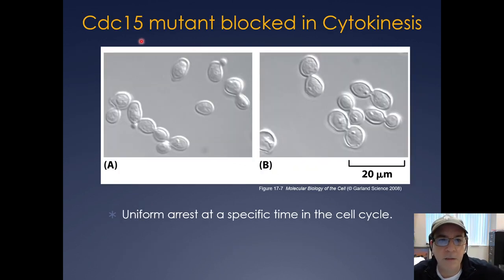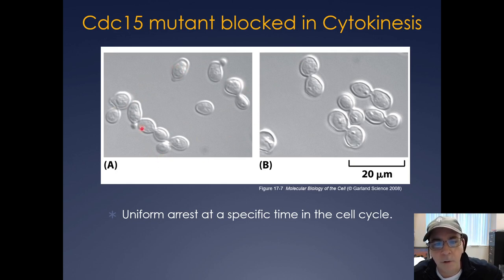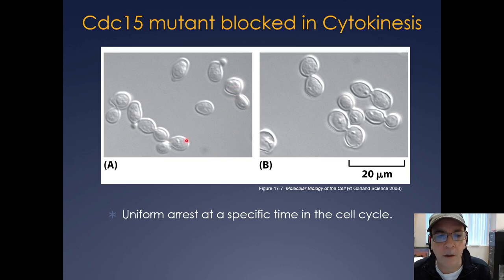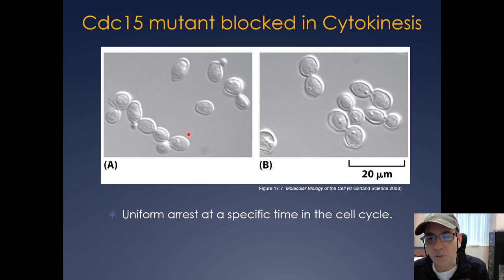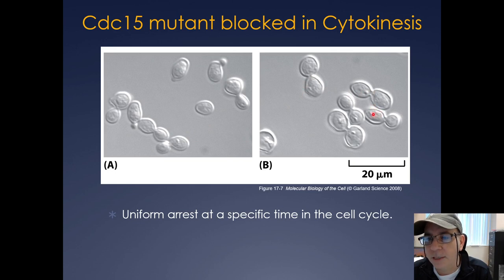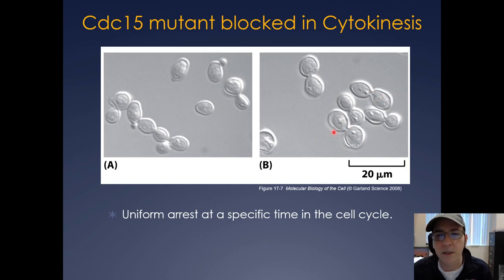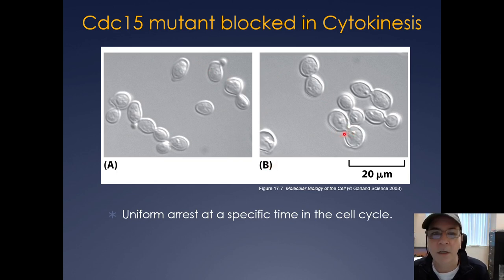Here's a perfect example: CDC15 is a TS allele that actually blocks cytokinesis. At the permissive (lower) temperature, you can see the CDC15 mutant growing and budding normally. The second you move it to the restrictive temperature — the temperature at which CDC15 no longer works — the cells all stall at the same spot and are blocked in cytokinesis. These cells can't finally pinch off, giving a uniform arrest at a specific time in the cell cycle. Just by looking at this, you can tell that the CDC15 gene is needed to finish cytokinesis.